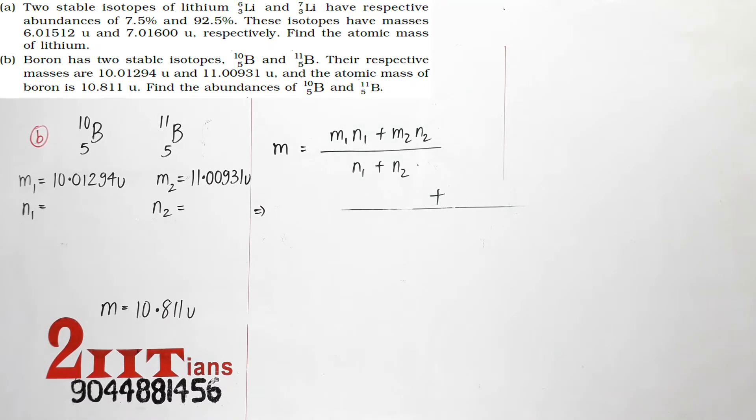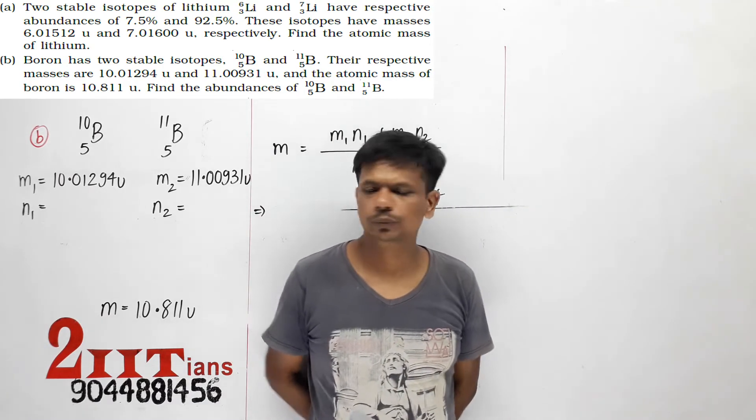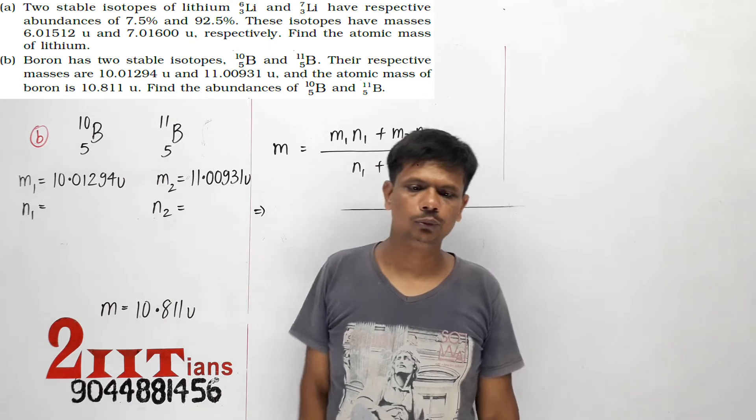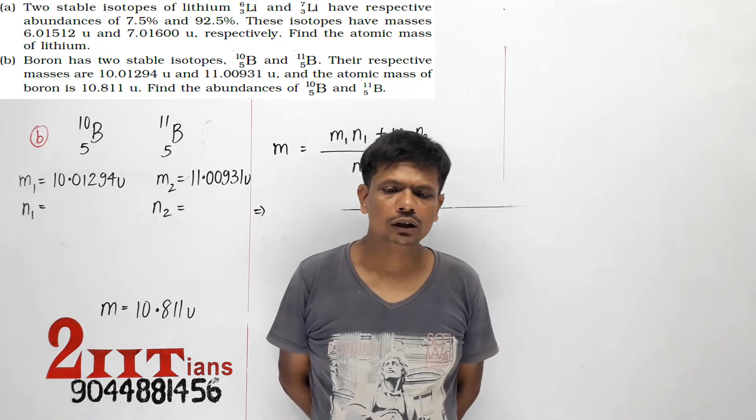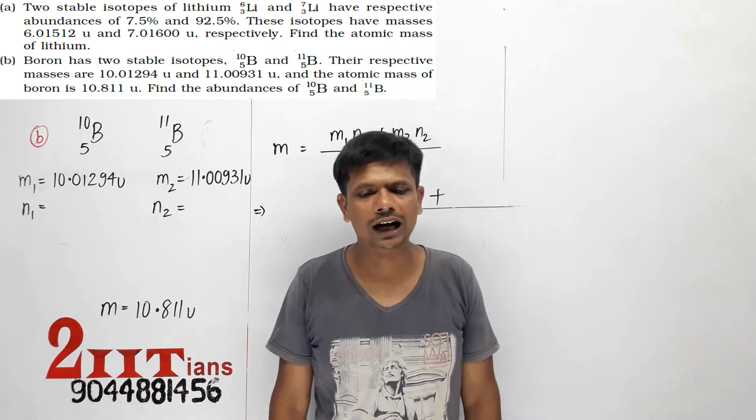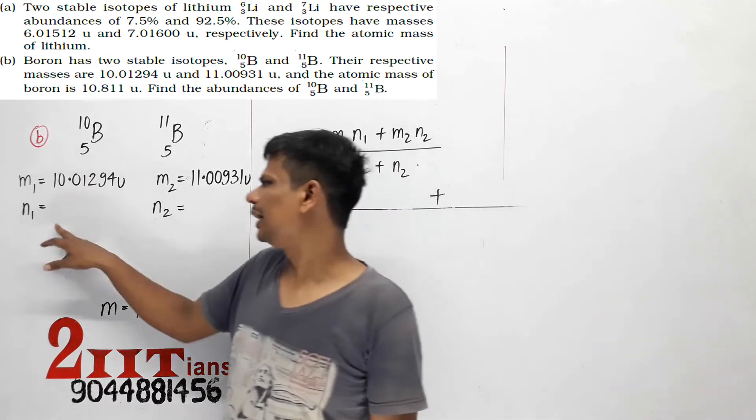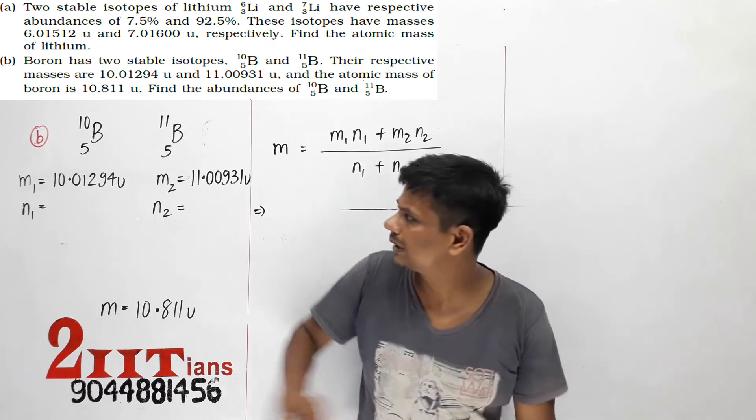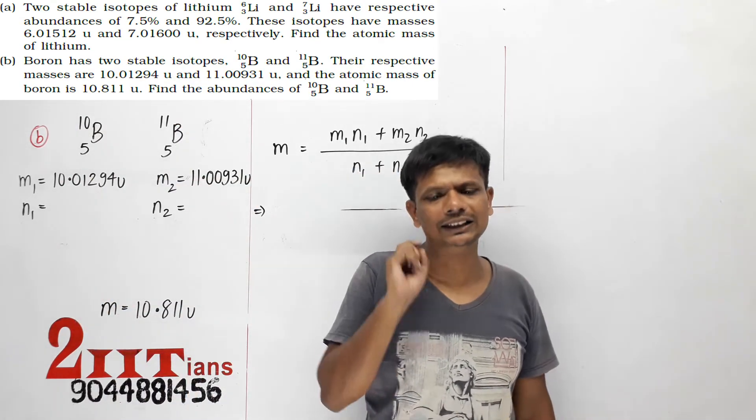Part B is a little different. Here you're asked for abundance. Boron has two stable isotopes, ¹⁰B and ¹¹B. Their respective masses are given, and the atomic mass of boron has been calculated. You need to find the abundances.